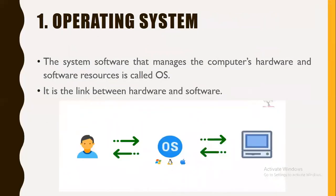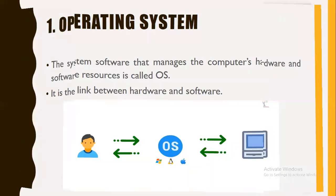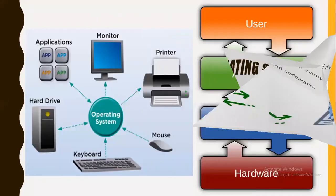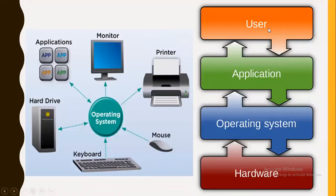Now, the operating system. It is software which manages the computer hardware and software resources. It is basically the link between the hardware and software, and also a link between the user and the hardware. This can be explained with the help of this diagram. You can see the user and the hardware, with two things between them: the application software and the operating system. This means we users cannot communicate with the hardware if the operating system is missing.